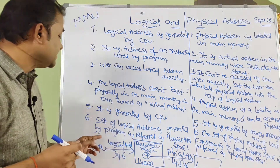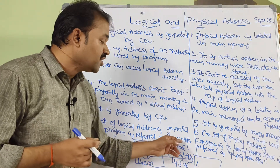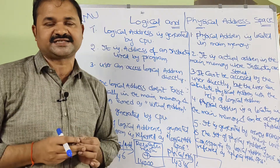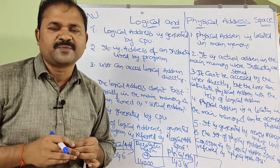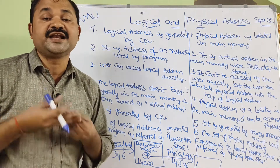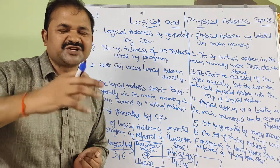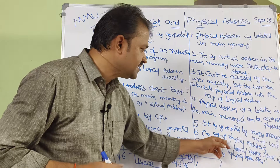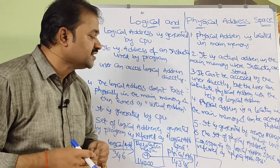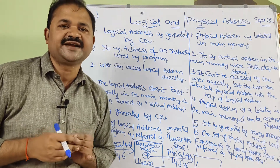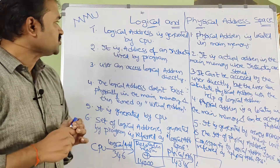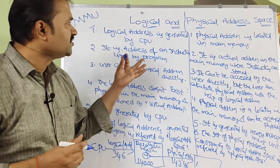The set of logical addresses generated by the program is referred to as the logical address space — that is, a collection of logical addresses. For example, if a program contains 10 instructions, all those 10 instruction addresses form the logical address space. Whereas the set of physical addresses corresponding to the logical address space is referred to as the physical address space. This covers the differences between logical and physical address.